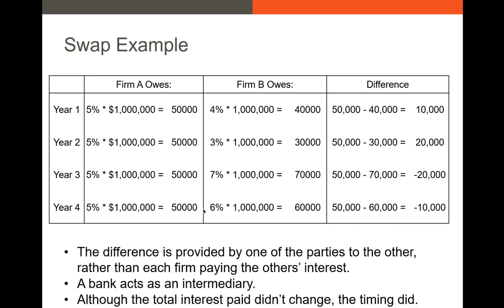The difference is provided by one party to the other, rather than each firm paying the other's full interest. Firm A pays Firm B, or Firm B pays Firm A, with the bank always acting as intermediary. Although the total interest paid didn't change, the timing did. Firm A started with a variable rate and now has a fixed rate. Firm B started with a fixed rate and ended up with a variable rate. In year one, Firm B got $10,000 it could use to pay off its fixed rate loan, and Firm A got certainty.